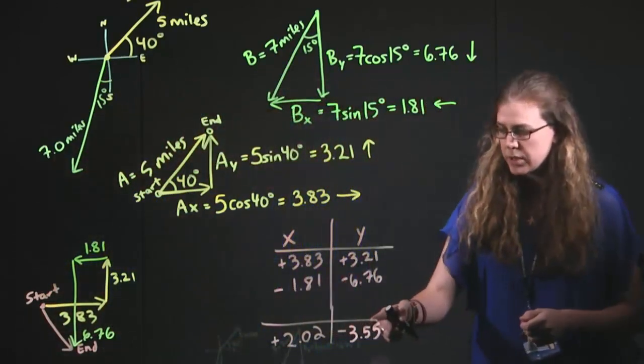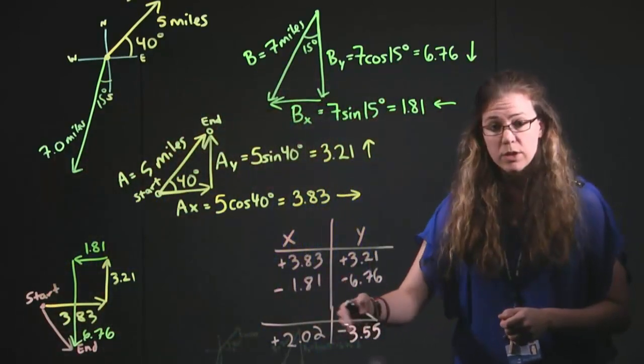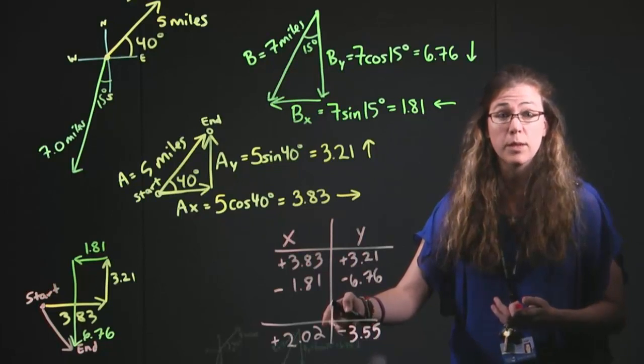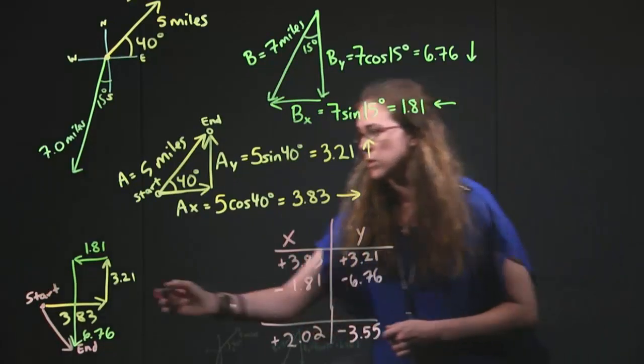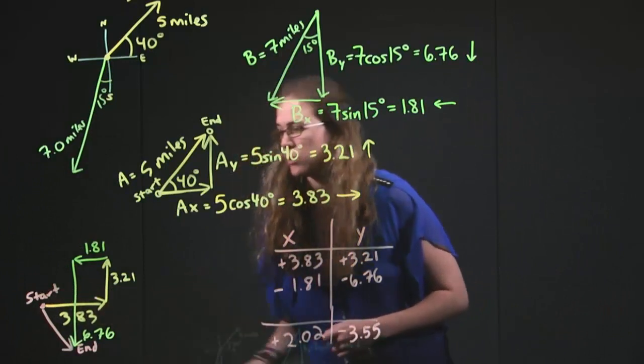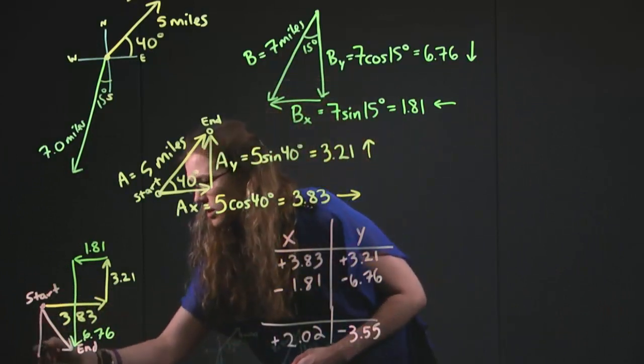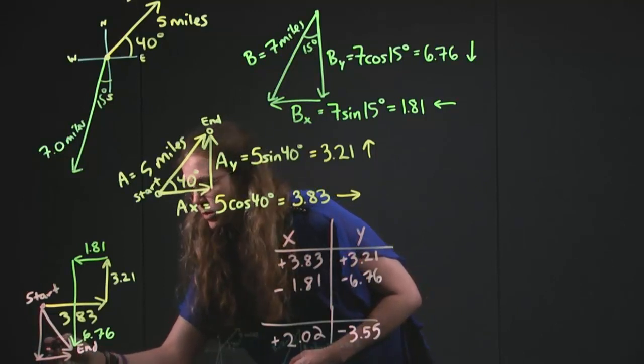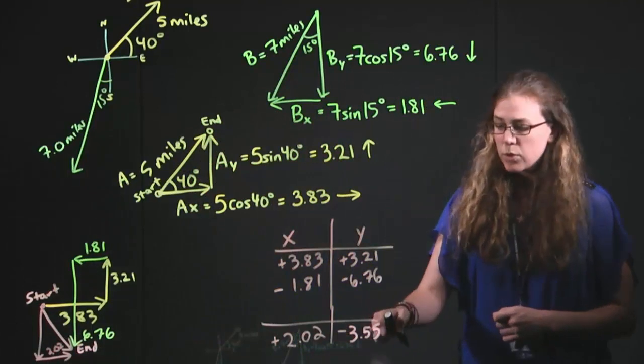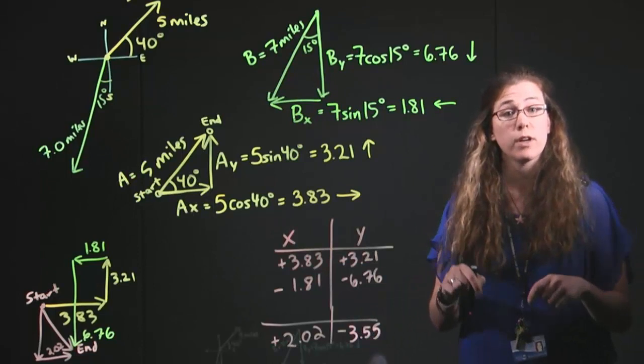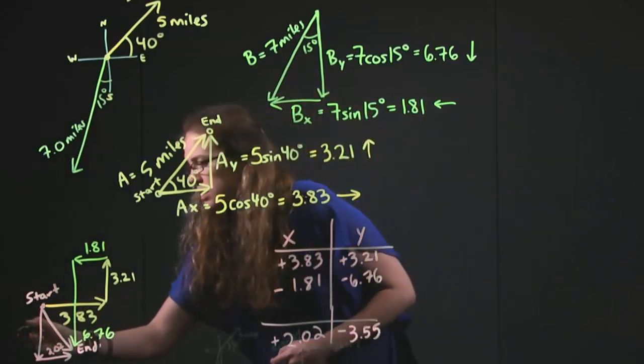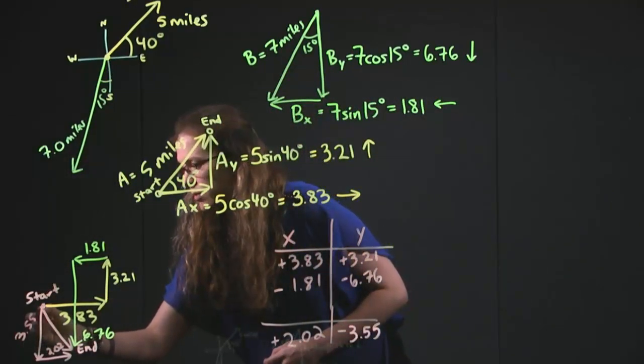Now, if we come back to our numbers here, that also is something that we were able to tell from the table, that we're to the right, 2.02. So, this much is 2.02, or if I draw it like that, this much is 2.02. And we're told in our little table that we've got negative 3.55, that means 3.55 down, and so this is 3.55.